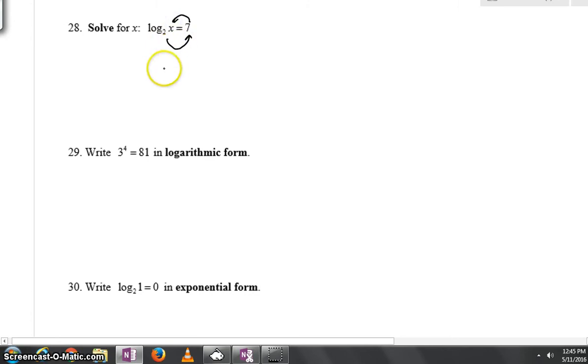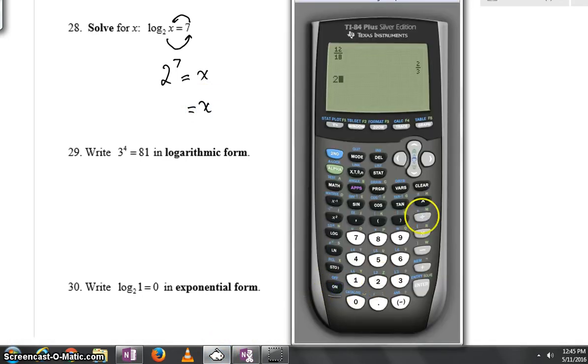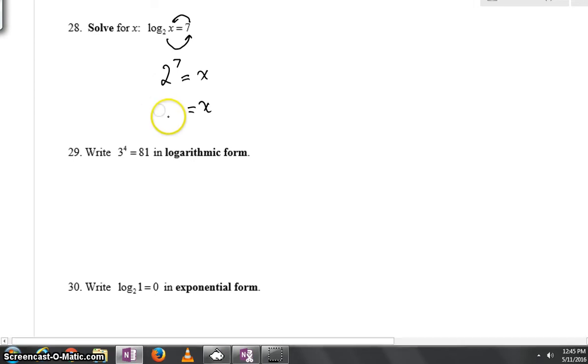Take a look at number 28. This becomes 2 to the 7th is going to equal x. And of course, at this point, you can definitely figure out what 2 to the 7th is. You could take your calculator out and just type in 2, raise it up to the 7th power, and get an answer of 128, and be done.